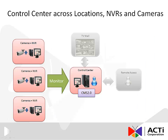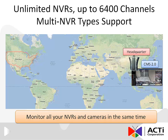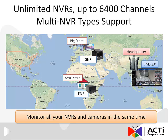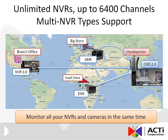The first key objective of the CMS 2.0 is to allow a control center to monitor systems across locations, MVRs, and cameras. A user may own an ACTI ENR, GNR, and MVR3 system across locations depending on the size and use of each location. The CMS 2.0 can support all listed MVR types up to 6400 channels. It enables the user to view live and playback video in any combination of cameras in any location at any time.